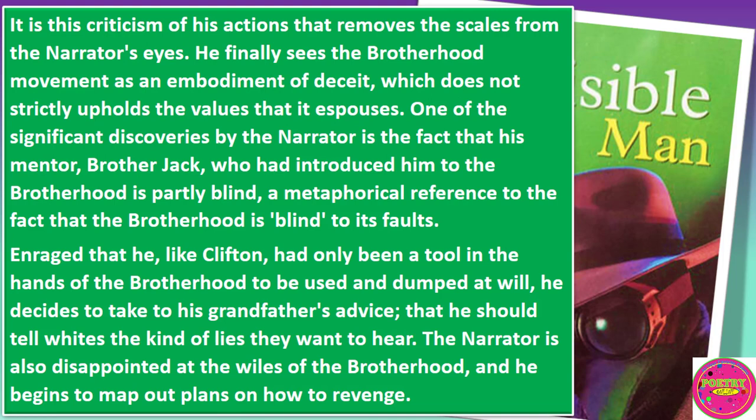One of the significant discoveries by the narrator is the fact that his mentor, Brother Jack, who had introduced him to the Brotherhood, is partly blind — a metaphorical reference to the fact that the Brotherhood is blind to its faults. Enraged, he realizes that he, like Clifton, had only been used as a tool in the hands of the Brotherhood, to be used and dumped at will. He decides to take his grandfather's advice and tell the Brotherhood the kind of lies they want to hear. The narrator is also disappointed with the leadership of the Brotherhood and begins to map out plans on how to take revenge.